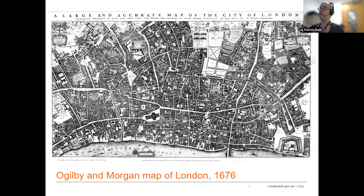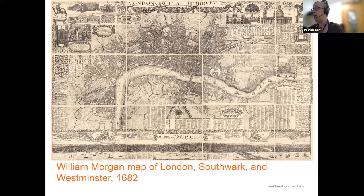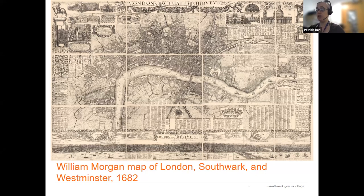This is the Ogilby and Morgan map mentioned earlier. In contrast to the Woodcut map, it doesn't show the south bank of the Thames at all. The next map is the revised version, issued by William Morgan in 1682. This version expanded its coverage to show all of the built-up areas around the City of London at the time. It included areas in Southwark as far south as the Elephant and Castle, Bermondsey, and as far east as Rotherhithe Village. This was the most comprehensive map of London available until John Rocque's 1746 map.